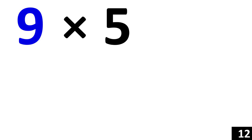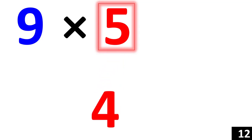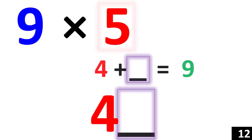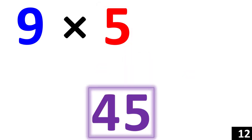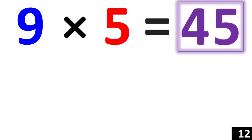9 times 5. 1 less than 5 is 4. So, 4 is your first number. Then we say, 4 plus what number gives us 9? 5. Therefore, 45 is your answer.